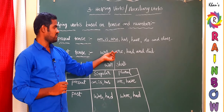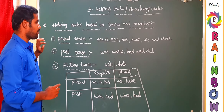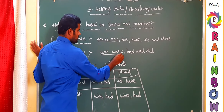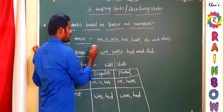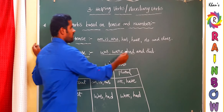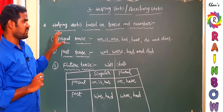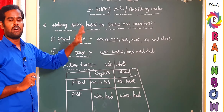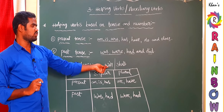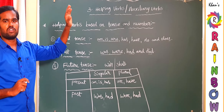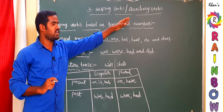Past tense helping verbs are: was, were, had, and did. 'Was' and 'were' are past tense B-forms; 'had' is the past tense Have-form (perfect verb); and 'did' is the past tense Do-form. For future tense, we use 'will' or 'shall' to express actions going to happen in the near future. Now coming to the division of helping verbs based on number — singular or plural.